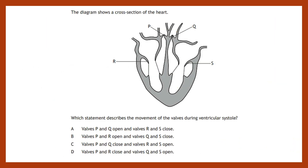Now for our past paper question — pause the video and select your response. We have a diagram showing a cross-section of the heart with four valves labelled R, N, S, P, and Q. Which statement describes the movement of the valves during ventricular systole — which pair needs to be open and which pair needs to be closed? R and S are between the chambers, so they must be the AV valves, which leaves P and Q as the semi-lunar valves between the ventricles and the vessels.